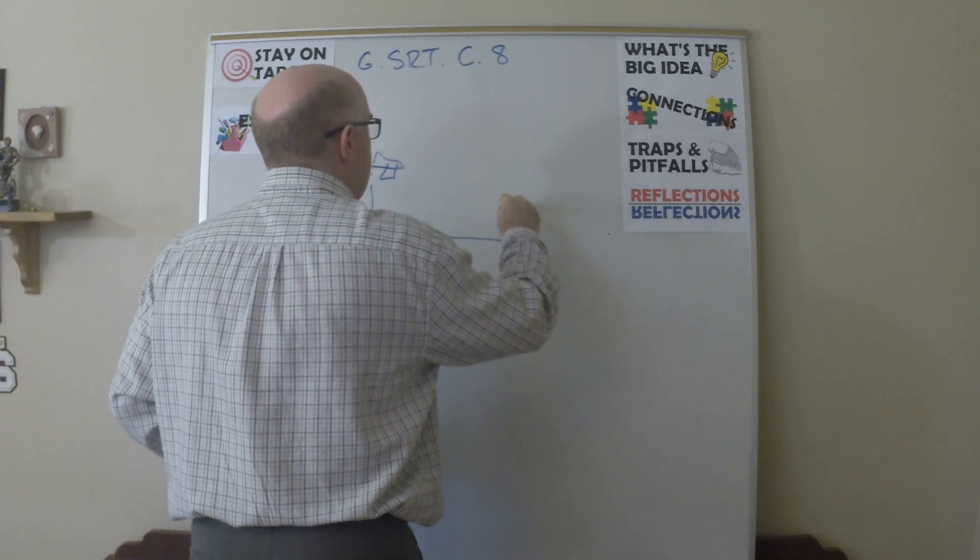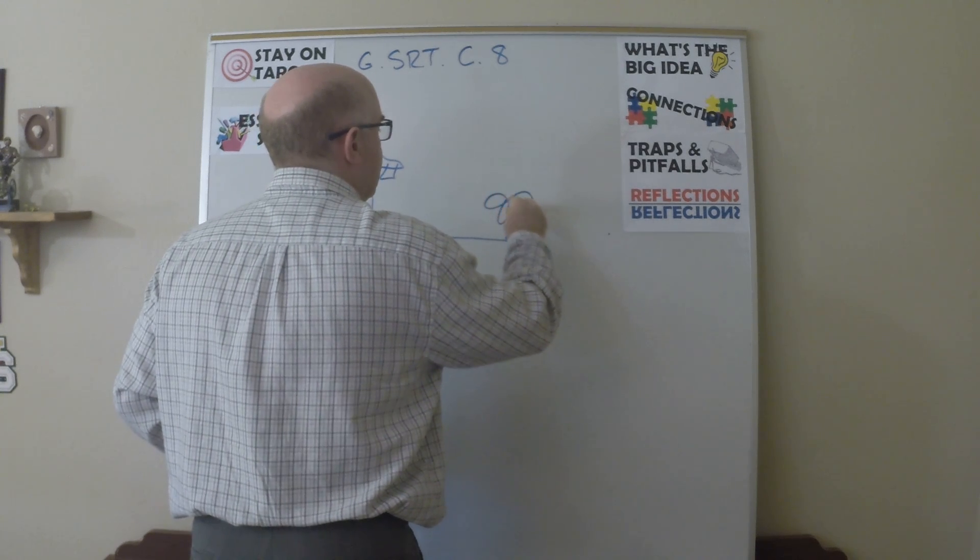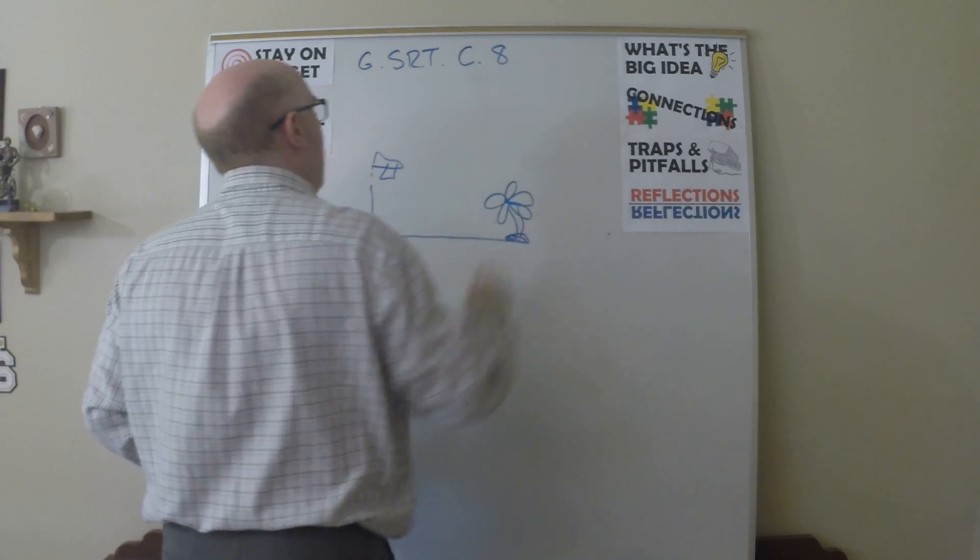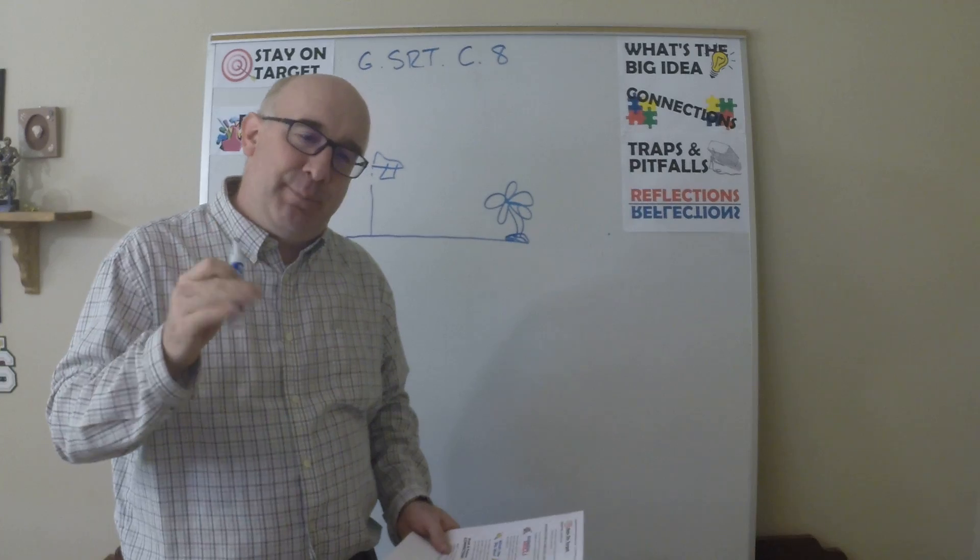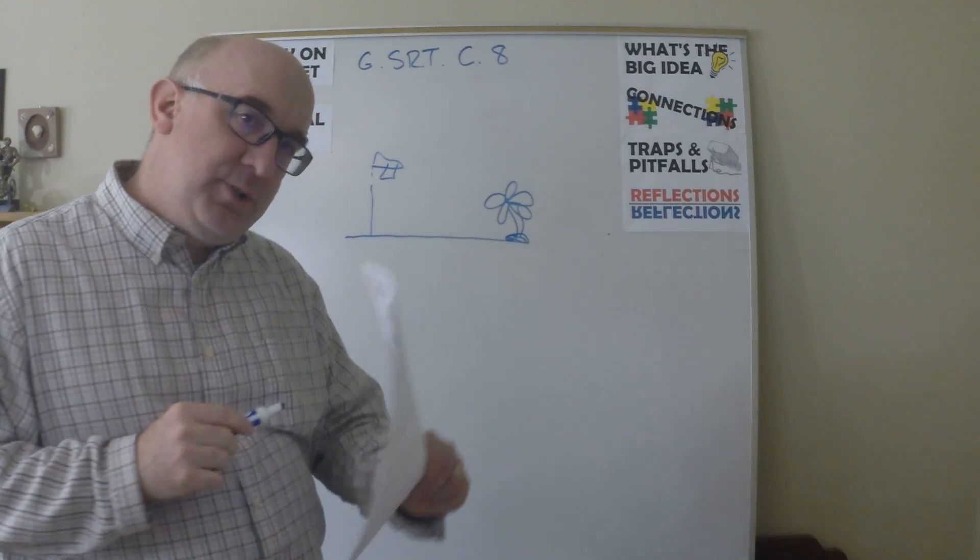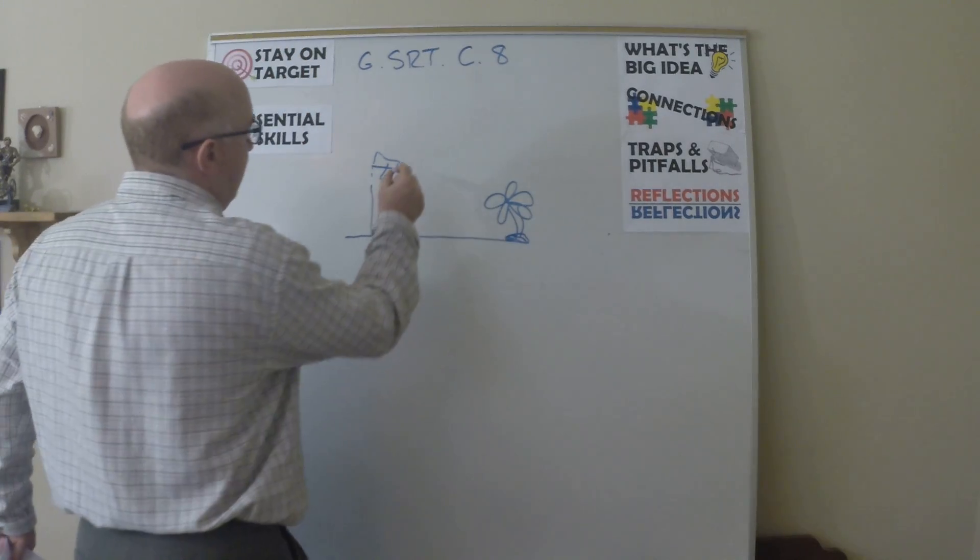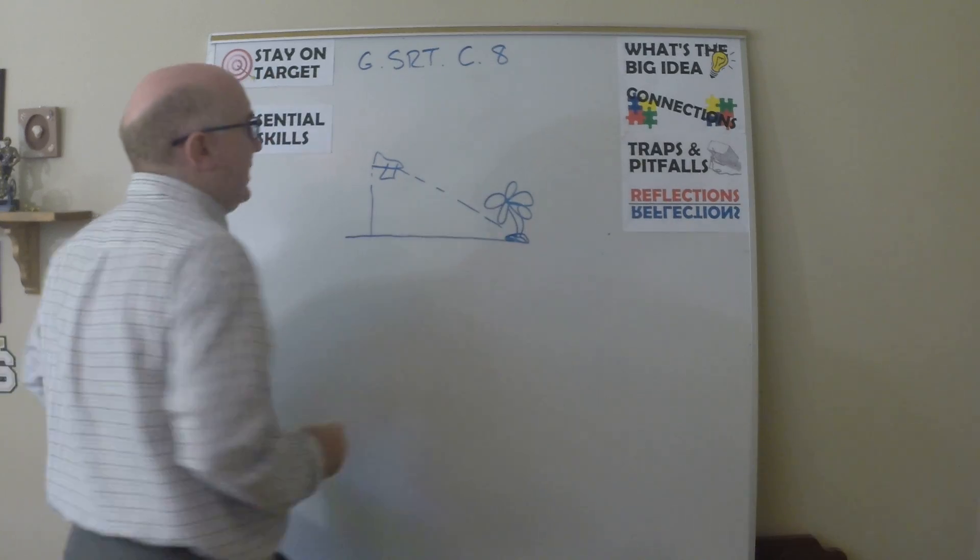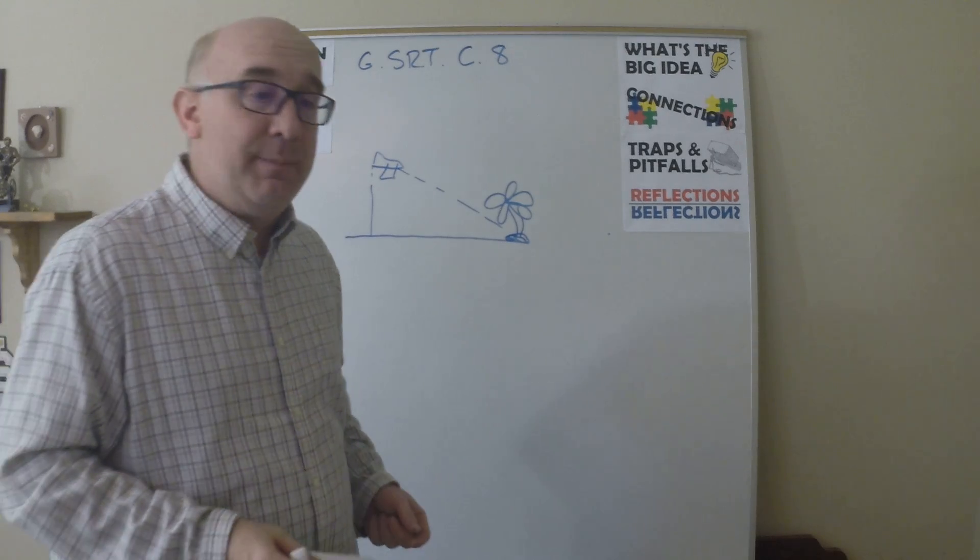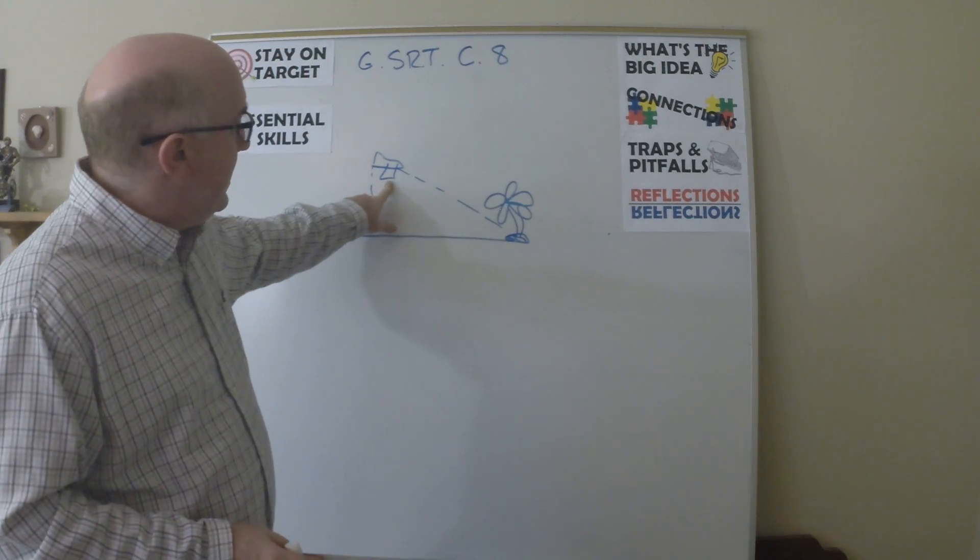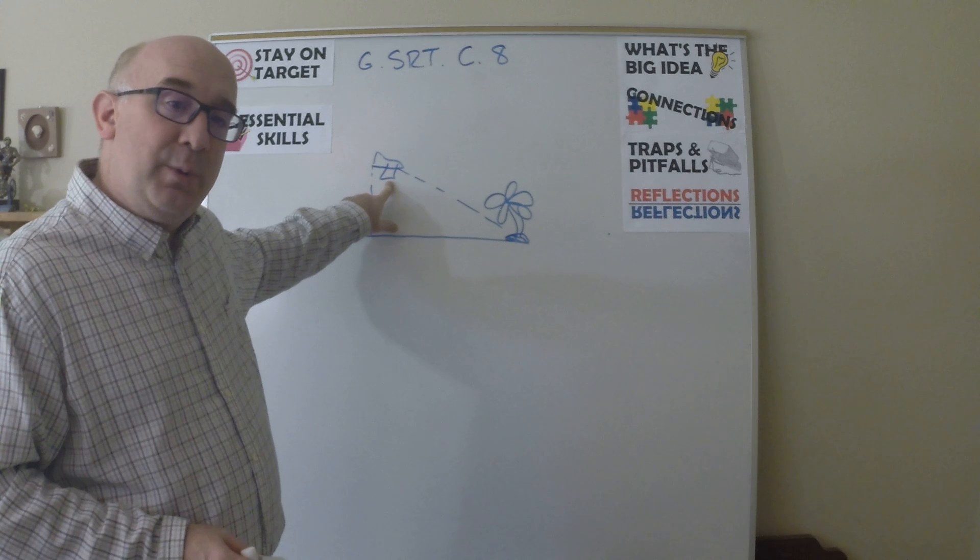When we talk about an angle of depression, here's what students do. They say, 'Ah, that's from the plane looking down upon the island.' And if it said the angle of depression is 15 degrees or something like that, they would want to put it here.